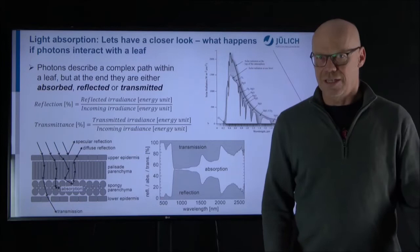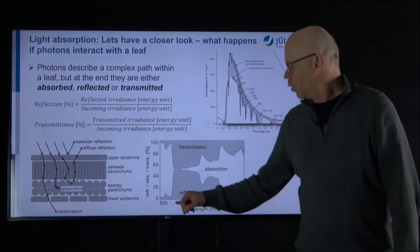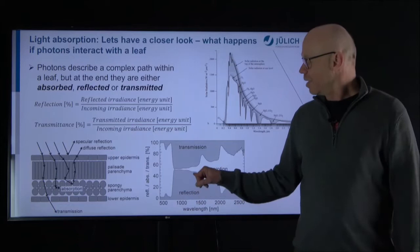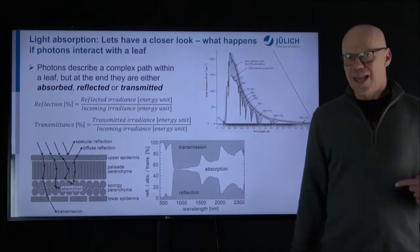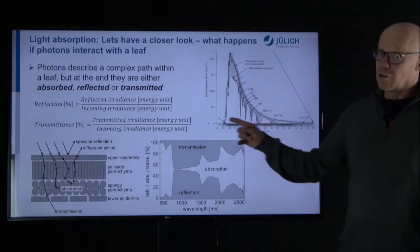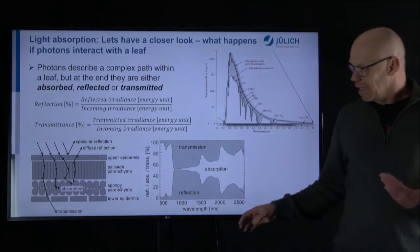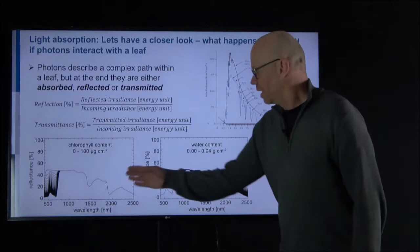In the visible range, where all the photosynthetic pigments are active, most photons are absorbed with very little reflected or transmitted — just minor peaks that cause the green color of leaves. But in the near-infrared range around 1,000 nanometers, almost no photons are absorbed; instead most are either reflected or transmitted. By recording these spectra, we can detect what is actually in the leaf by comparing the reflection, absorption, and transmission — always keeping in mind that we need to normalize our data to the incoming light.